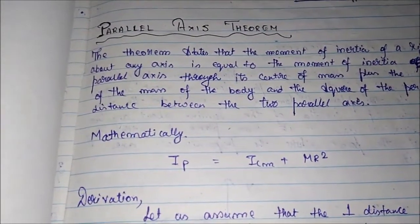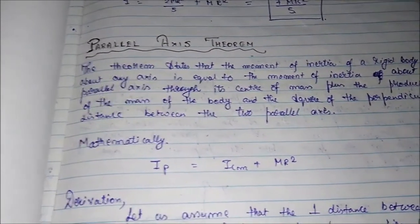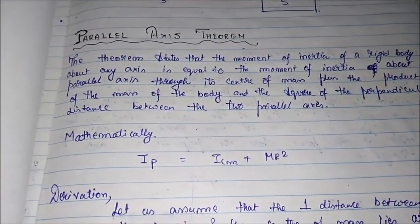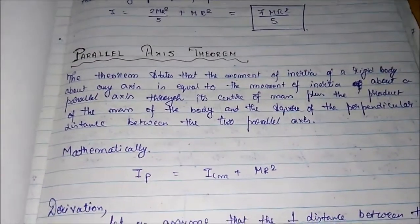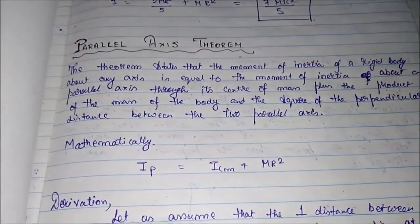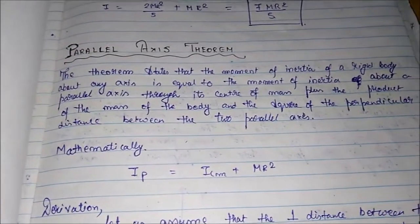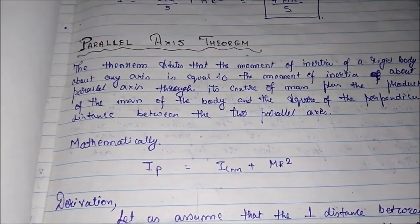The theorem states that the moment of inertia of a rigid body about any axis is equal to the moment of inertia about a parallel axis through its center, plus the product of the mass of the body and the square of the perpendicular distance between the two parallel axes.